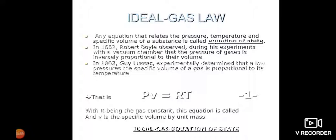In 1802, Gay-Lussac's experiment determined that at low pressure, the specific volume of gas is proportional to its temperature. That means PV equals RT, with R being a gas constant. This equation is called the ideal gas equation of state.